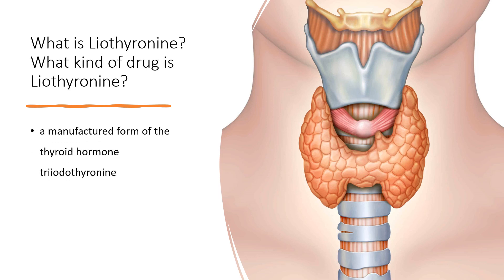Liothyronine is a manufactured form of the thyroid hormone triiodothyronine. It is most commonly used to treat hypothyroidism and myxedema coma. It can be taken by mouth or by injection into a vein. Side effects may occur from excessive doses. Liothyronine was approved for medical use in 1956 and is available as a generic medication.